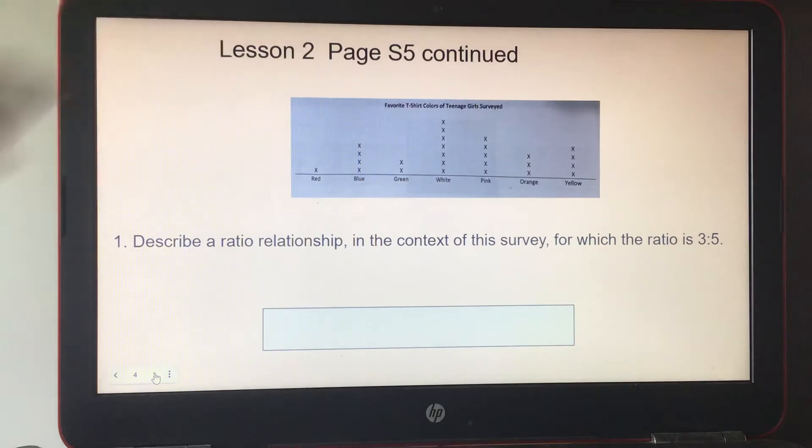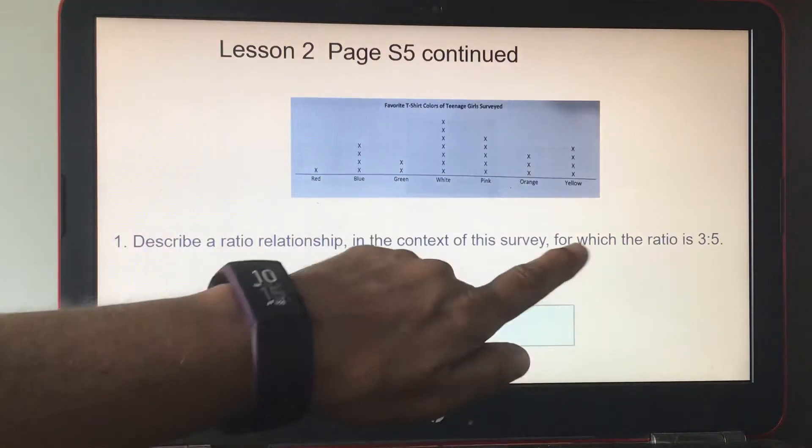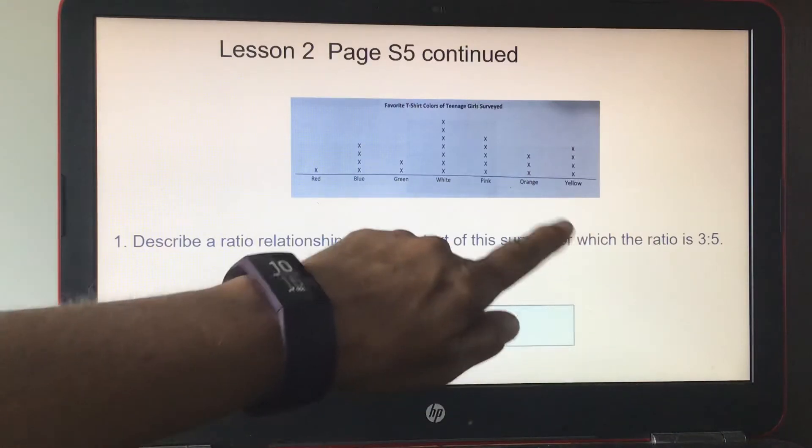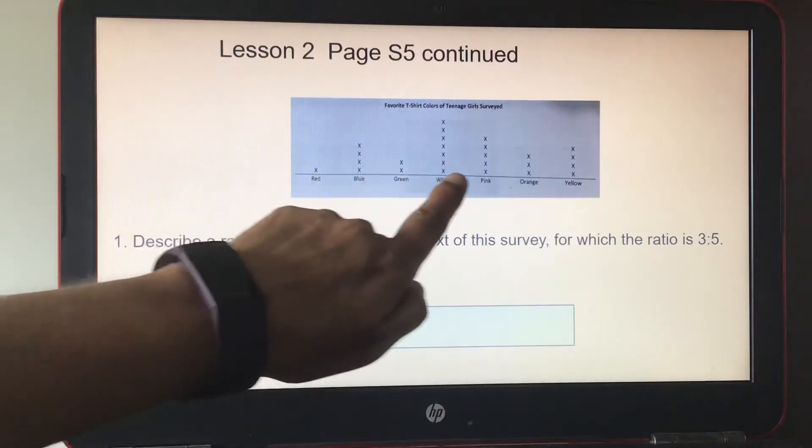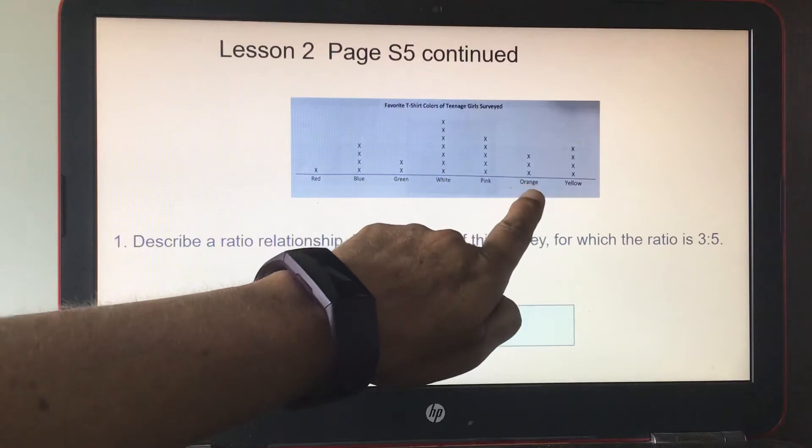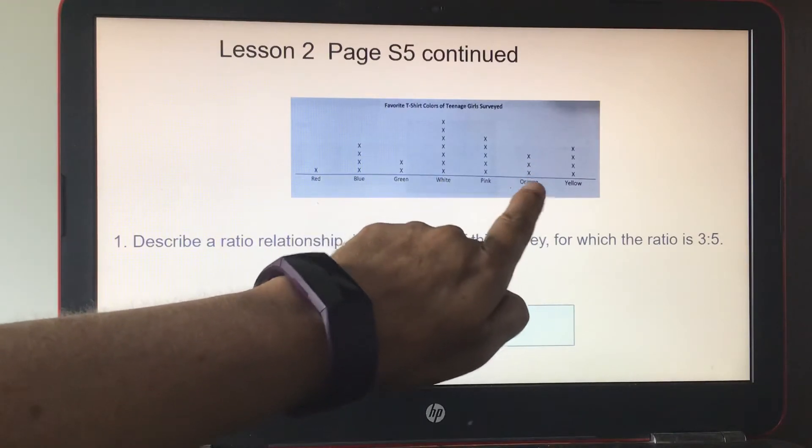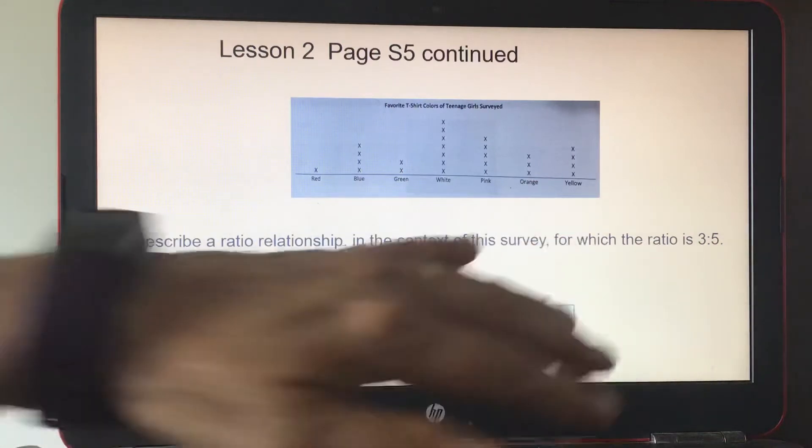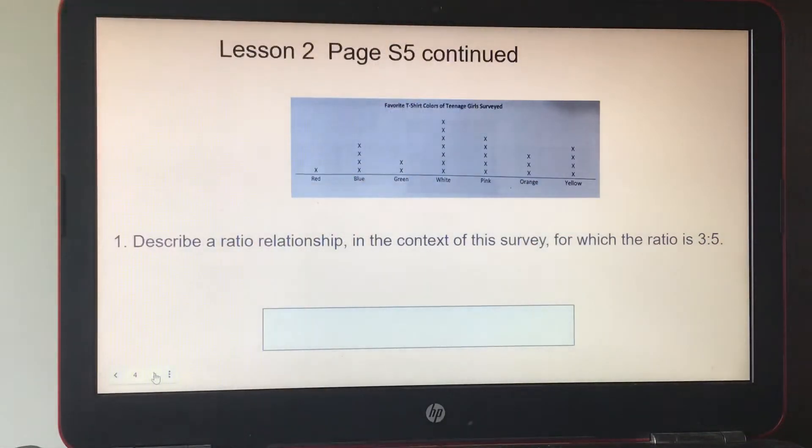It tells you, describe a ratio relationship in the context of the survey for which the ratio is three to five. So the first number is three. I'm looking for one that has three. Here it is. So I would say three orange t-shirts to five, whichever one has five, colored t-shirts.